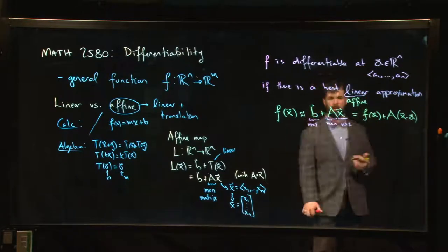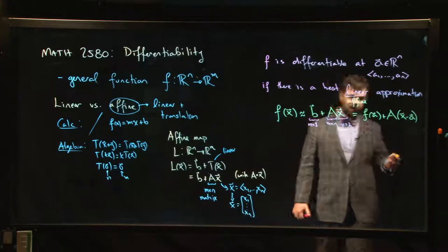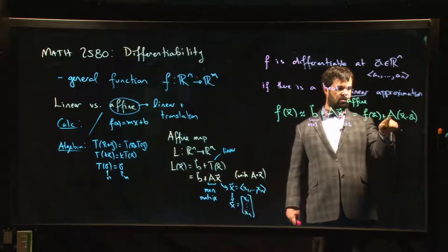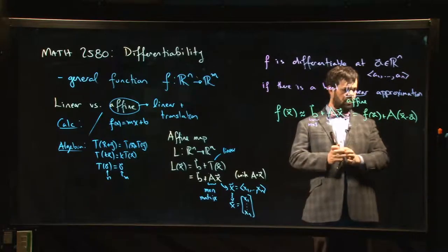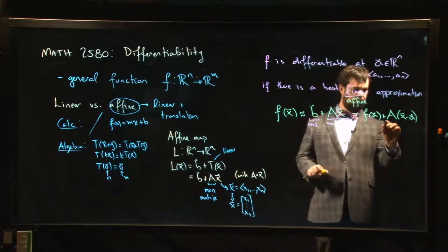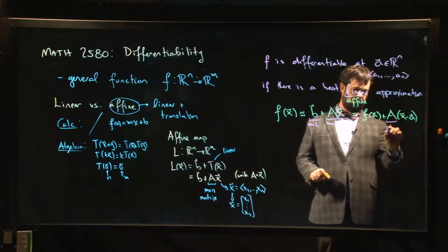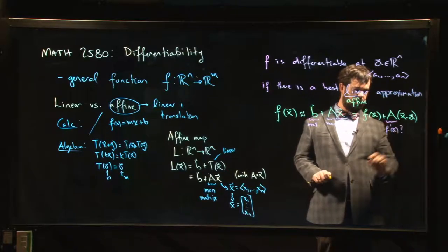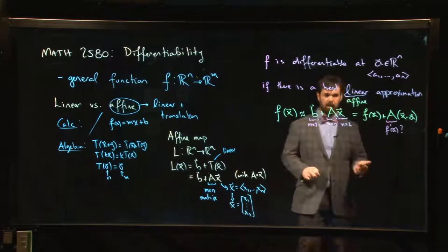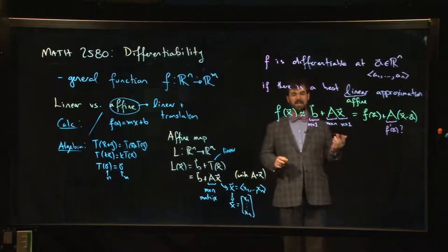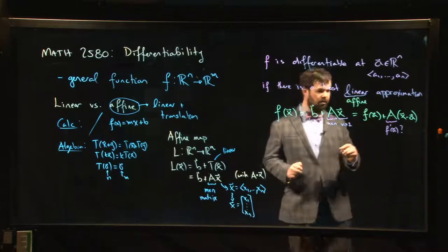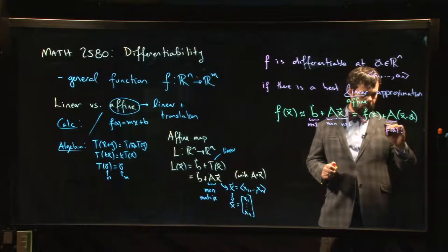Which should look familiar from the one variable case. In the one variable setting, the only difference is that this A here, that's usually where the derivative comes in. So is this some analog of f prime here? What is it exactly? And it is. This is the derivative, but the derivative is no longer a number or a function. The derivative is a matrix.